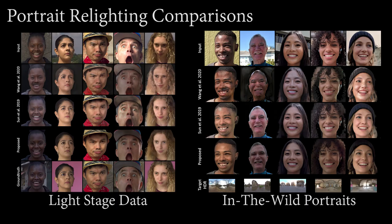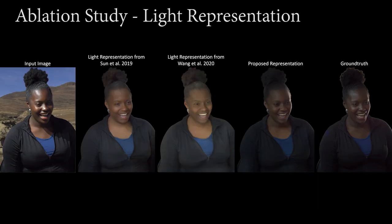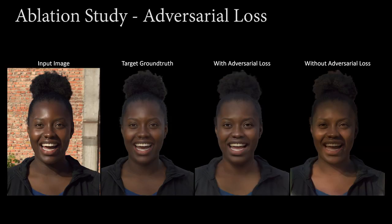Now let's take a look at further results generated using our method. For relighting, we compare with two recent state-of-the-art techniques. Our method outperforms both for evaluation subjects filmed in the light stage as well as for in-the-wild portraits. To evaluate the effectiveness of our novel in-network lighting representation, we perform an ablation study comparing with alternative representations from recent work, outperforming each. We also demonstrate the importance of including an adversarial loss term in the face region, which aids in harsh shadow and specularity removal from the input image.